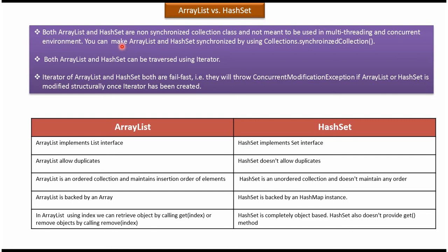Both ArrayList and HashSet are non-synchronized, so we cannot use ArrayList and HashSet in a multi-threading and concurrent environment. We can make ArrayList and HashSet synchronized by using the collections.synchronizedCollection method. Using Iterator, we can traverse ArrayList and HashSet. The Iterator of ArrayList and HashSet are fail-fast, meaning both will throw a ConcurrentModificationException if ArrayList or HashSet is modified structurally once the Iterator has been created.